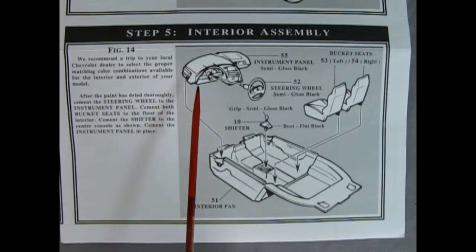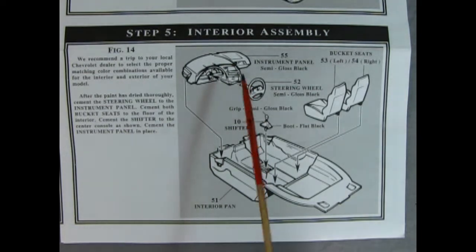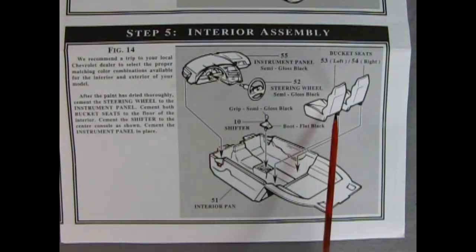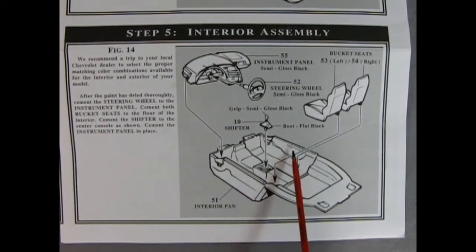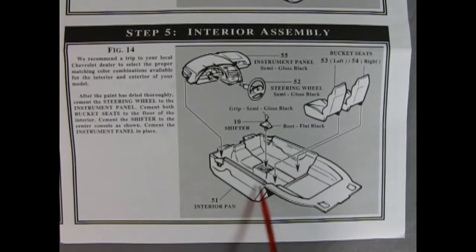Step five shows our interior assembly. Here again we get the wonderful dashboard. This time around we also have the airbag in place. Then we get our steering wheel going in there and our rear seats, or our front bucket seats pardon me, going in place, and then our gear shift lever with the boot dropping into our center console.